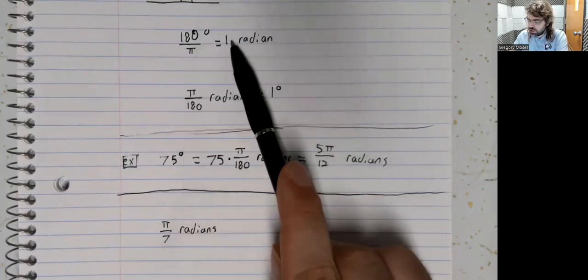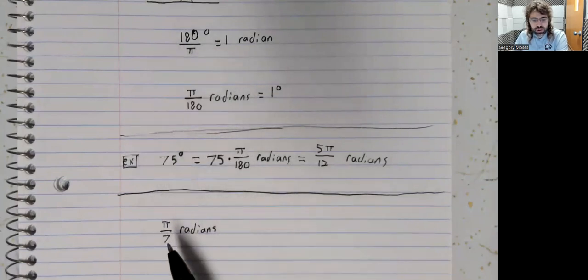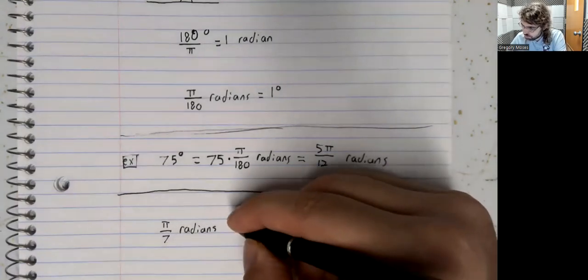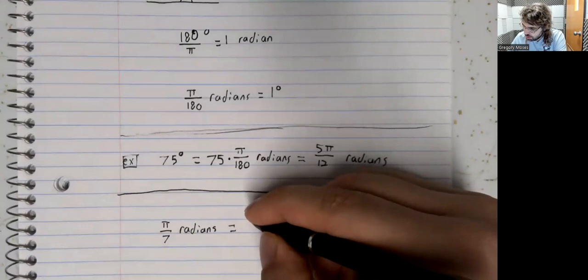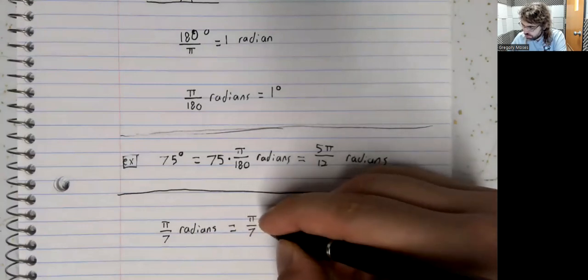Well, 1 radian is 180 over pi degrees, so pi over 7 radians is going to be pi over 7 times that.